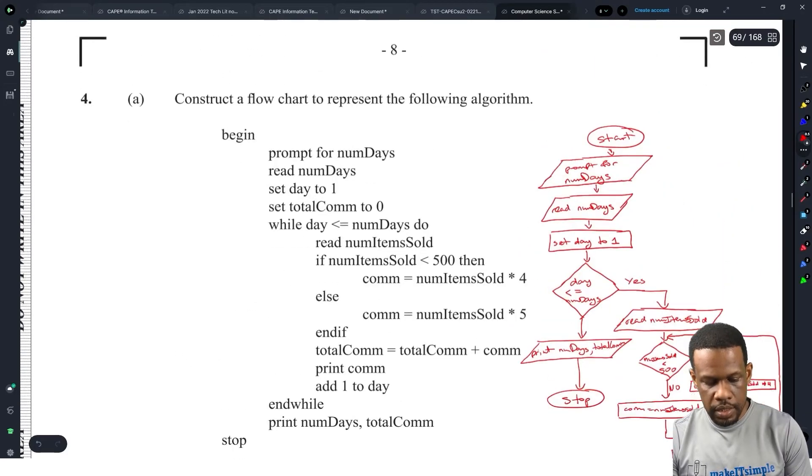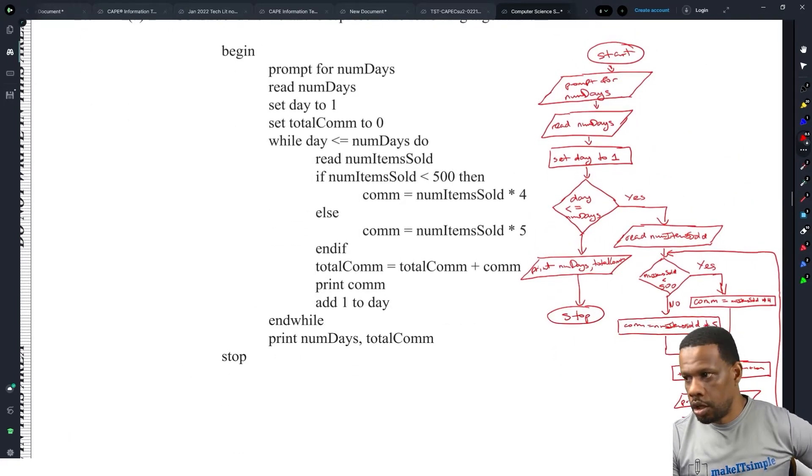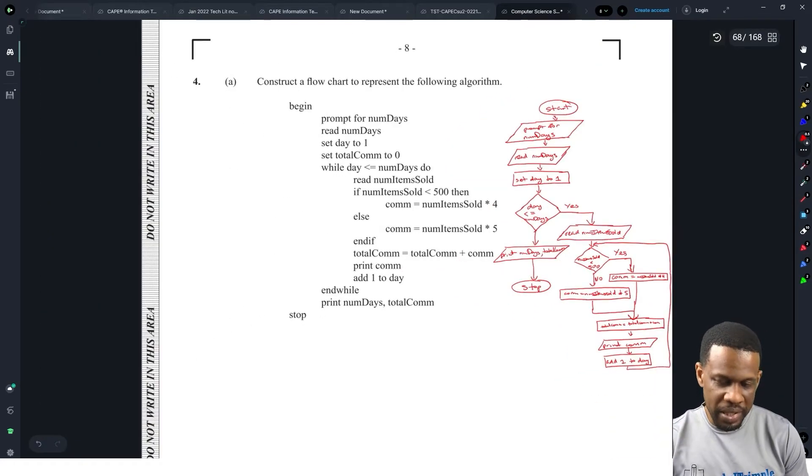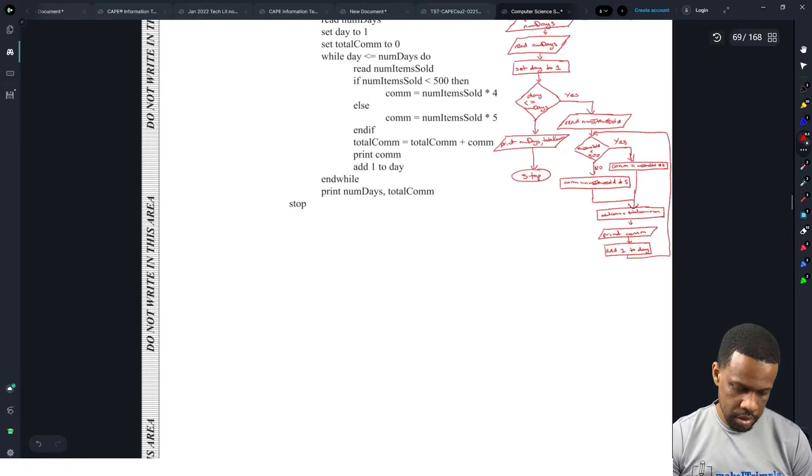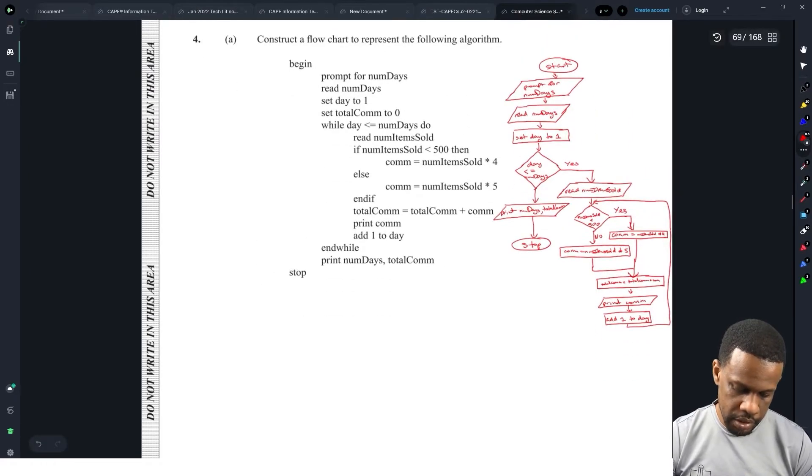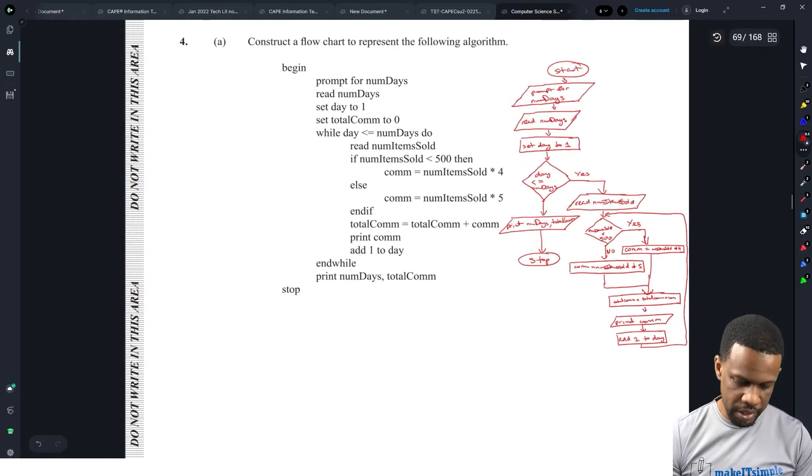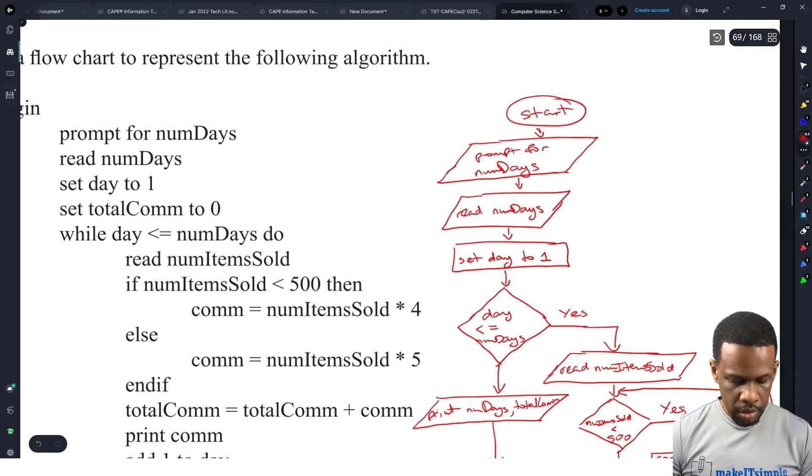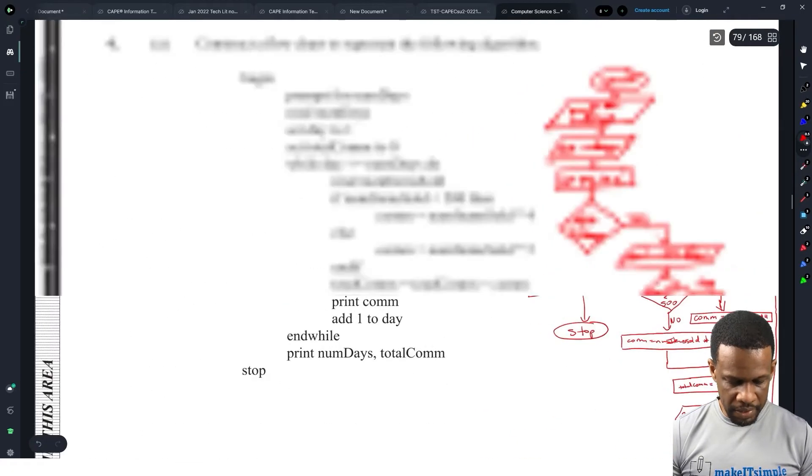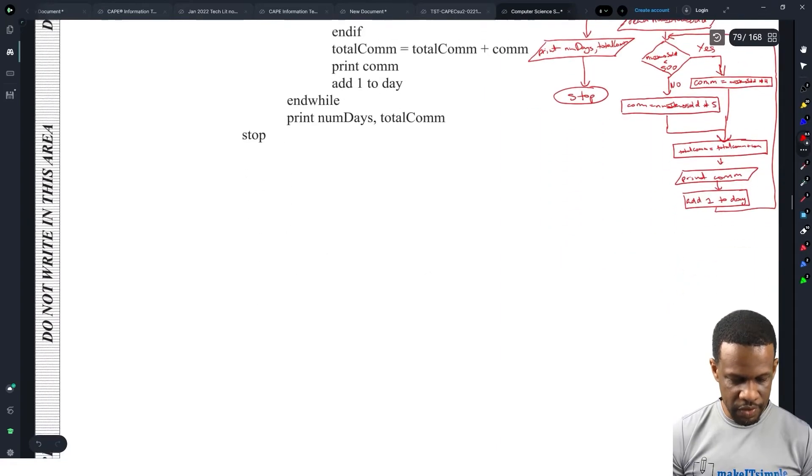That is now going to loop back up to here. Alright, I need to get closer to the loop properly. We need to loop back up there. And then the end while, the end while is just one thing which is print num days, total com, and then stop. Alright, I think that's it there. We work hard for our 12 marks.